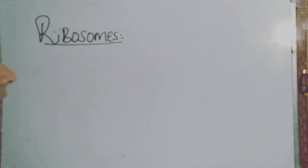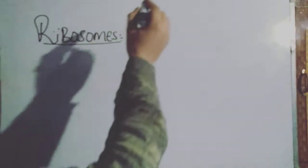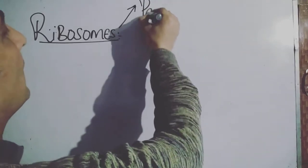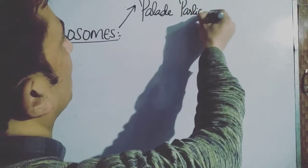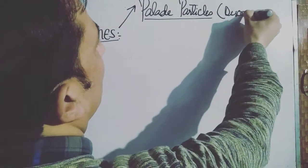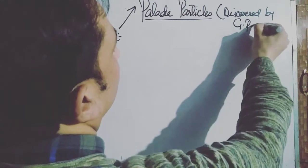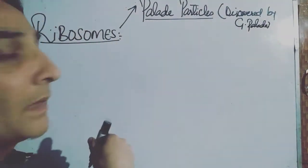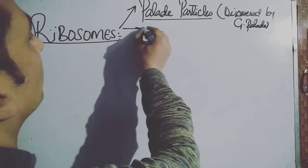Welcome back students. In this lecture we are discussing cell organelles, and today our topic is ribosomes. Ribosomes are also known as Palade particles or Palade granules, because they were first discovered by George Palade. So this is an alternative name: Palade particles or Palade granules. They are also known as cell engines.